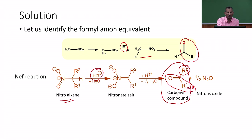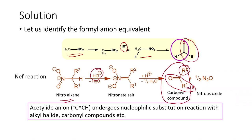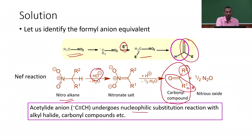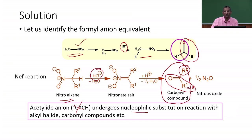The nitroalkane derivative can be converted to the corresponding carbonyl compound, confirming nitromethane as the formyl anion equivalent. The acetylide anion undergoes nucleophilic substitution with alkyl halides or carbonyl compounds, but cannot be used to prepare a carbonyl compound directly — so the acetylide anion is not the correct answer. Nitromethane is the only compound that can be treated as the formyl anion equivalent.